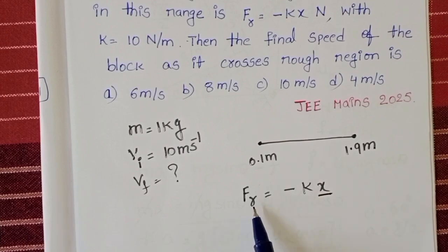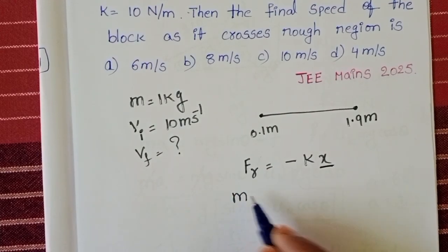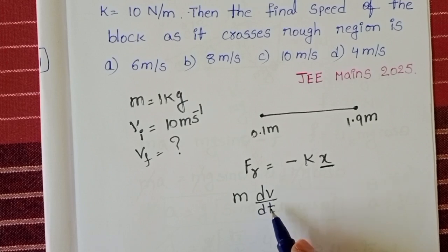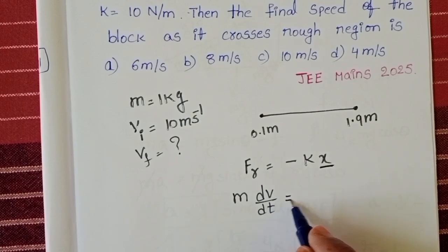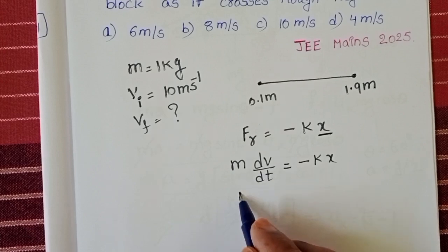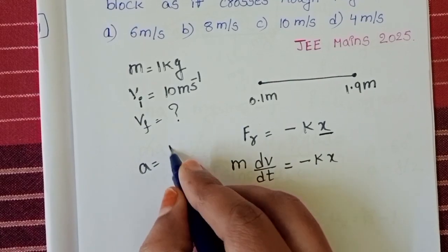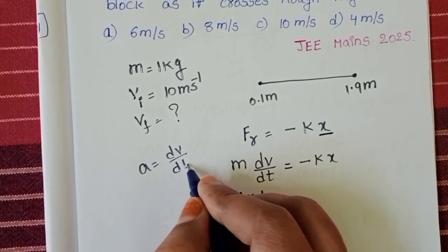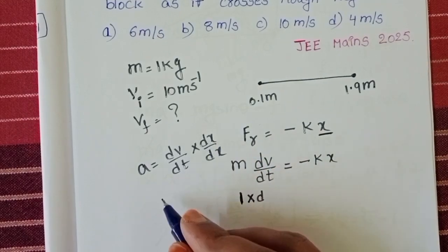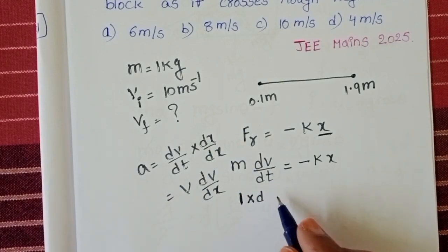We know force equals mass into acceleration. F equals mass into dv by dt. Rate of change of velocity is called acceleration. Minus k into x. Mass of the block is 1 kg. But the given force is function of x. So we know a equals dv by dt. Multiply and divide with dx. dx by dt equals velocity. Then it becomes v into dv by dx.